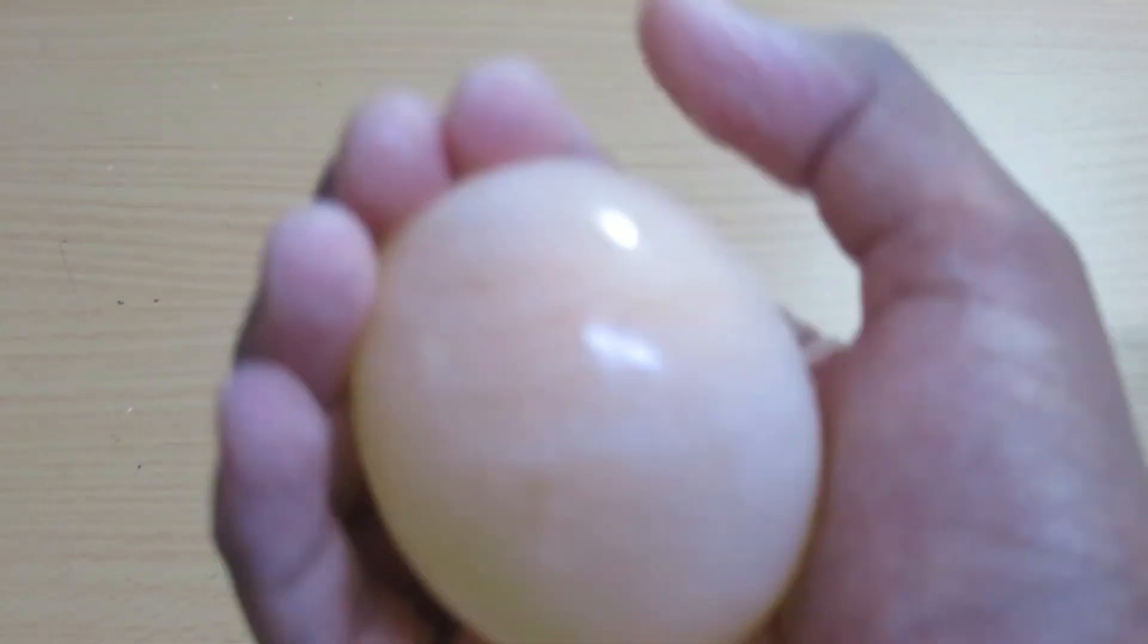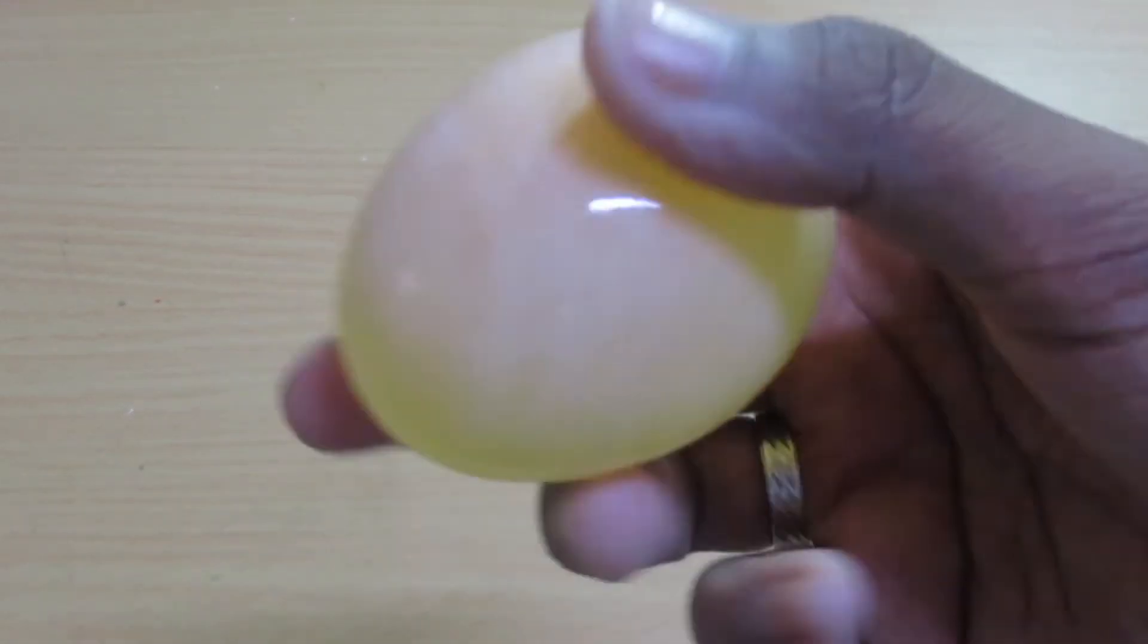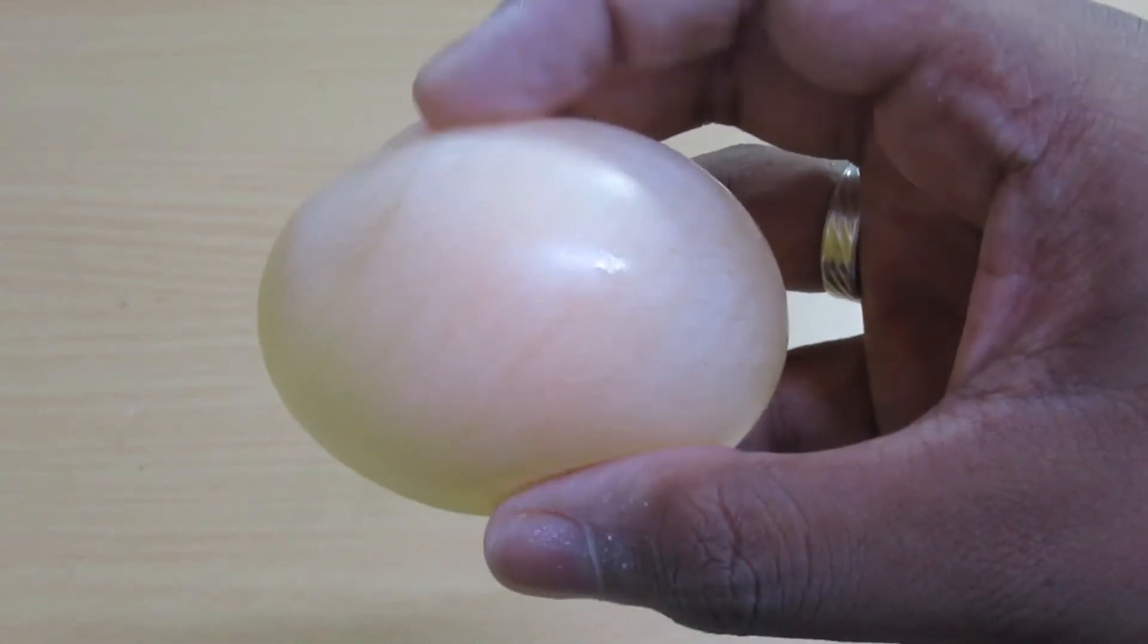When you wash it off, the egg is slightly squeegee and translucent and you can see the yolk in the middle and they are strong enough to bounce.